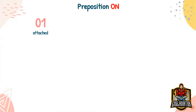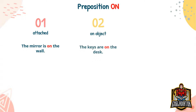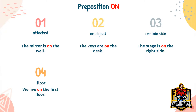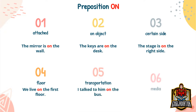Preposition 'on.' We use 'on' if we want to say that something is attached to something — for example: the picture is on the wall. We use 'on' for being on an object — for example: the keys are on the desk. Also for a certain side — for example: the stage is on the right side. We use 'on' for a floor in a house — for example: we live on the first floor. We also use 'on' for public transportation — for example: I talked to him on the bus. And last, we use 'on' for media — for example: I saw it on Twitter.